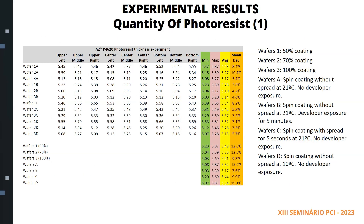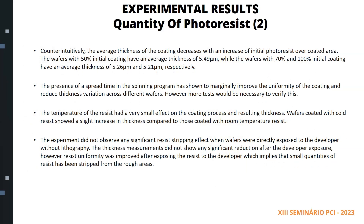In this slide, we can see the results of Experiment 1 for different quantities of photoresist applied on the wafers. We used three levels of initial coating: 50%, 70%, and 100% of the wafer area. We also used four different spinning programs: without spread at 21°C, without spread at 10°C, with spread for 5 seconds at 21°C, and with developer exposure. The table shows minimum, maximum, average, and mean deviation values for each wafer. Counterintuitively, the average thickness of the coating decreases with an increase of initial photoresist poured on the substrate. The wafers with 50% initial coating have an average thickness of 5.49 micrometers, while the wafers with 70% and 100% initial coating have average thicknesses of 5.26 micrometers and 5.21 micrometers, respectively.